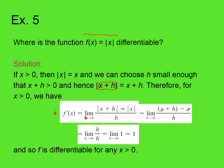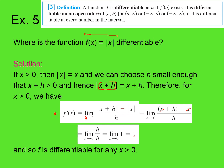And so f is differentiable for any positive x. Remember what we're trying to show — differentiability for the positive values. That holds if f prime of a exists. We just showed that it exists; it's one. So for x positive, f prime of a does exist for all those numbers, and we do have differentiability.